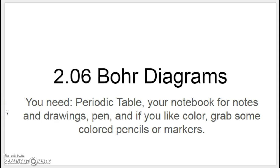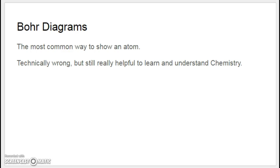You will need your periodic table, your notebook for notes and drawings, a pen, and if you like things colorful, grab some colored pencils or markers. Today would be a good time to do some color coding. In your notes, write: Bohr Diagrams — the most common way to show an atom, technically wrong, but still really helpful to learn and understand chemistry.